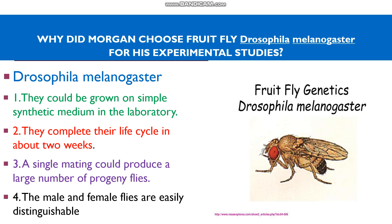Male and female flies are easily distinguishable. Also, the chromosome numbers are very few — just 4 pairs of chromosomes: 3 pairs of autosomes and 1 pair of sex chromosomes. For these reasons, Morgan chose Drosophila for his experimental studies.